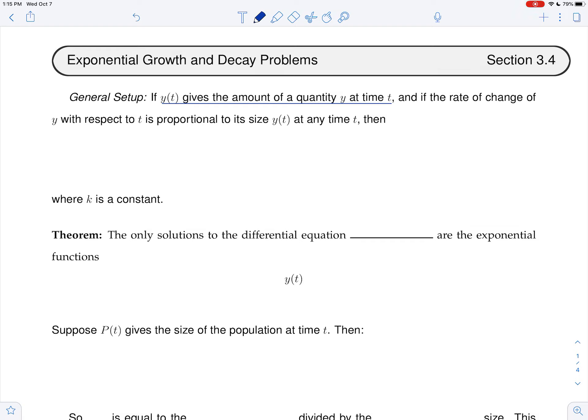So the rate of change of y, we're going to assume in these problems that the rate of change of y with respect to time, so just y prime, the rate of change of y is proportional, that's our keyword, to its size y(t) at any time t. And I want to focus for a minute on what that means. So the key word is proportional. What does it mean for two things to be proportional?